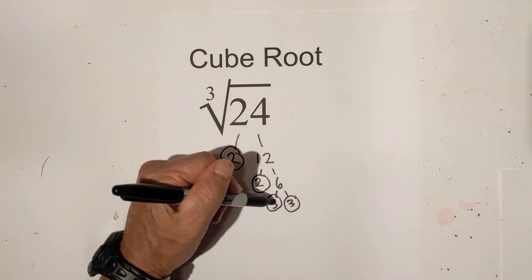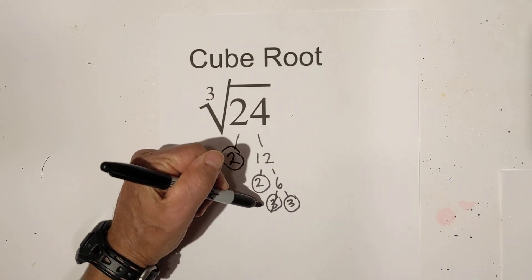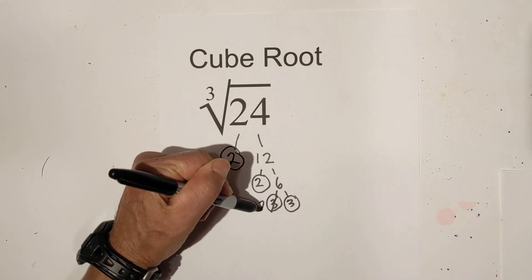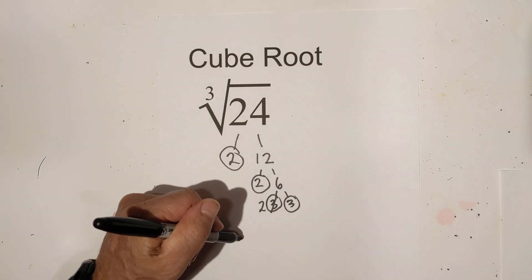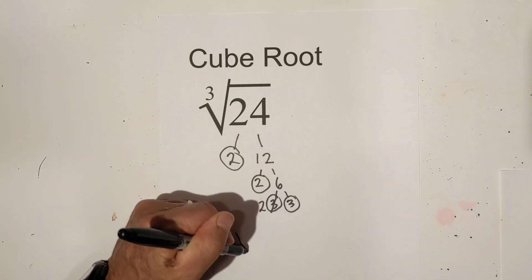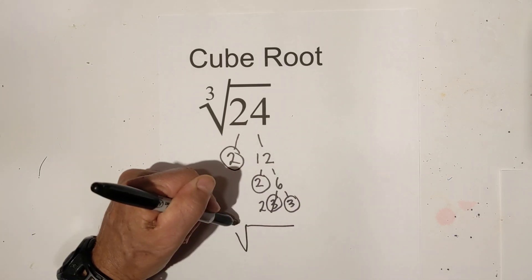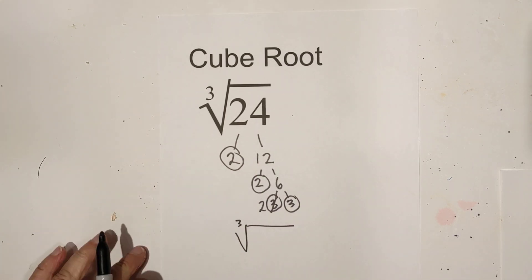Here's a mistake — it's 2 times 3. So now I'm going to go ahead and place them under the cube root sign.